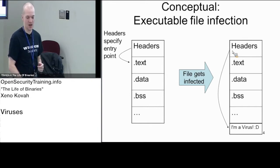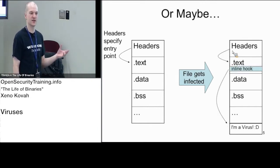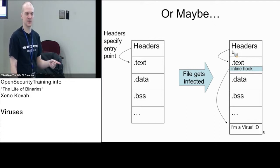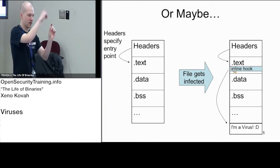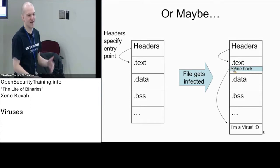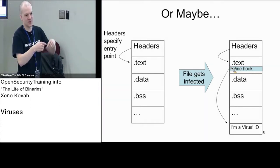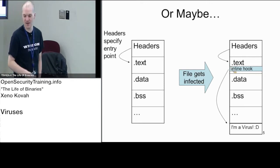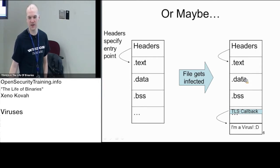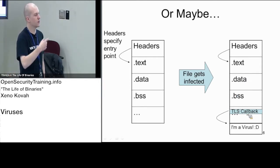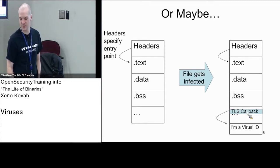When you see an address of entry point that points into the dot reloc or dot resource section, that's not right — it should point into the dot text section. Some early AV heuristics were just: if the address of entry point doesn't point into the dot text section, this is a malware file. To get around that, they leave the header pointing to the dot text section as normal, but put a jump instruction as the first thing at that address — so the first instruction at the entry point is 'jump to virus code.' The next AV heuristic was: if the address of entry point points directly to a jump, that's probably virus code. You can keep playing these games forever. Another approach is to leave the headers pointing at dot text but add a TLS callback, which invokes the virus code before the original entry point is ever called.